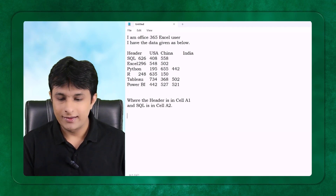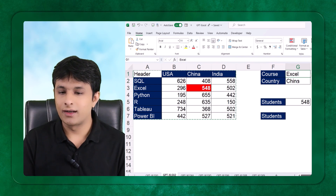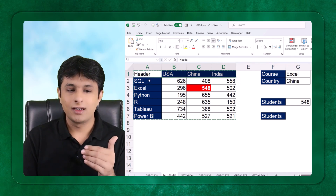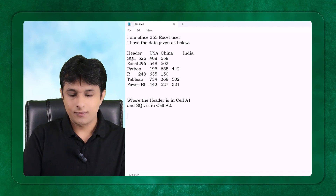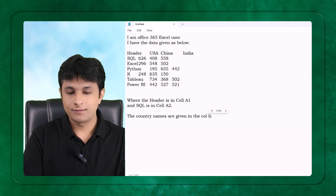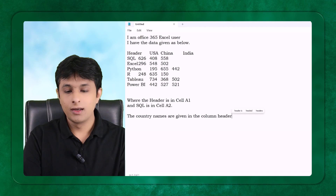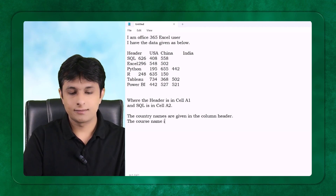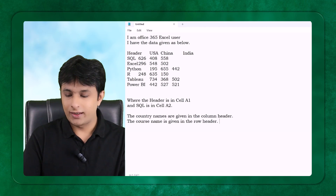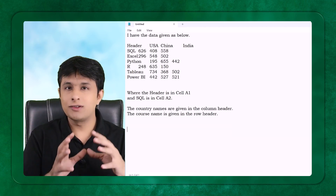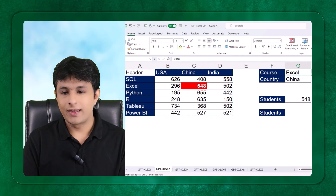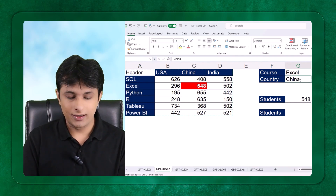I'll also describe the structure: if I select the country name and the course name, I should get the number of students. ChatGPT needs to understand that the country names are in the column headers and the course names are in the row headers. I write: 'The country names are given in the column headers and the course name is given in the row headers.' Then I ask the actual question.